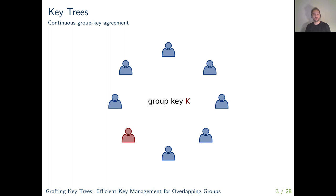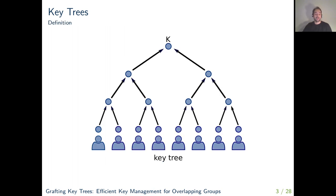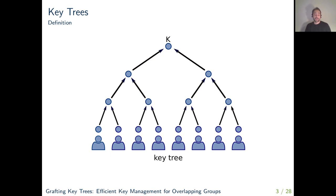Of course one wants this operation to have a communication cost that is as small as possible. The structure at the core of efficient CGKA schemes is usually Key Trees. This is a directed tree where the group key corresponds to the root and the users correspond to the leaves. Every node is associated with a key pair of an asymmetric encryption scheme, so you can think of the group key as just being the secret key at the root.